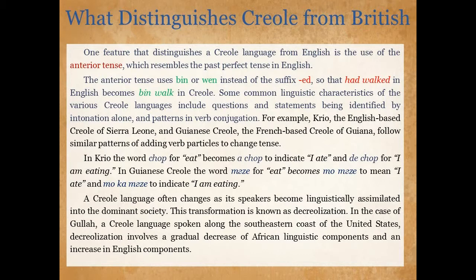For example, Krio — the English-based Creole of Sierra Leone — and Guyanese Creole — the French-based Creole of Guiana — follow similar patterns of adding verb particles to change tense. In Krio, the word 'chap' for 'eat' becomes 'a chap' to indicate 'I ate' and 'eat chap' for 'I am eating.' In Guyanese Creole, the word 'mangé' for 'eat' becomes 'mo mangé' for 'I ate' and 'mo ka mangé' for 'I am eating.' A creole language often changes as its speakers assimilate linguistically into the dominant society — this is called decreolization.